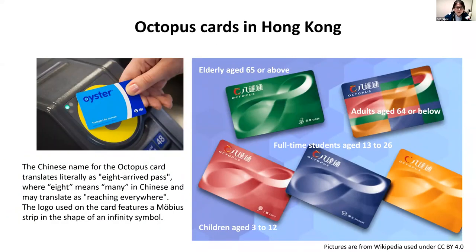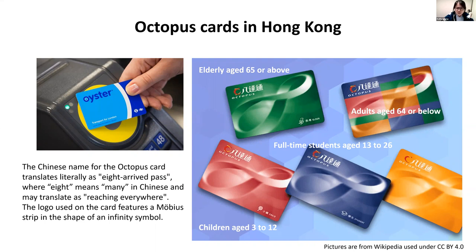That prompted us to look for the best mobility index in Hong Kong as well. The first thing we thought of was octopus cards — something like Oyster cards in London, first used to pay for public transportation fares. The Chinese name of the octopus card can be directly translated as 'reaching everywhere.' The logo features a Möbius strip in the shape of an infinity symbol.